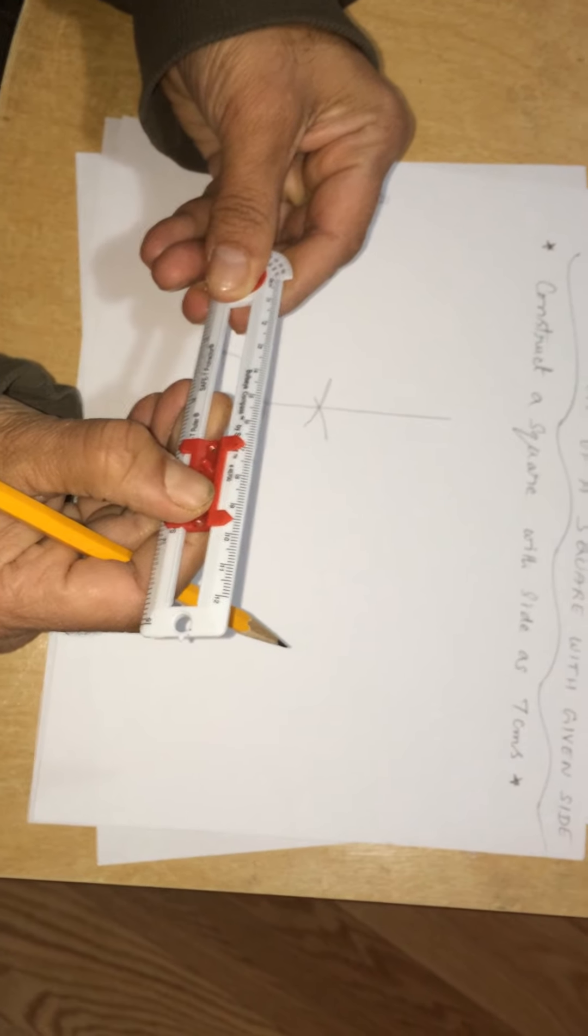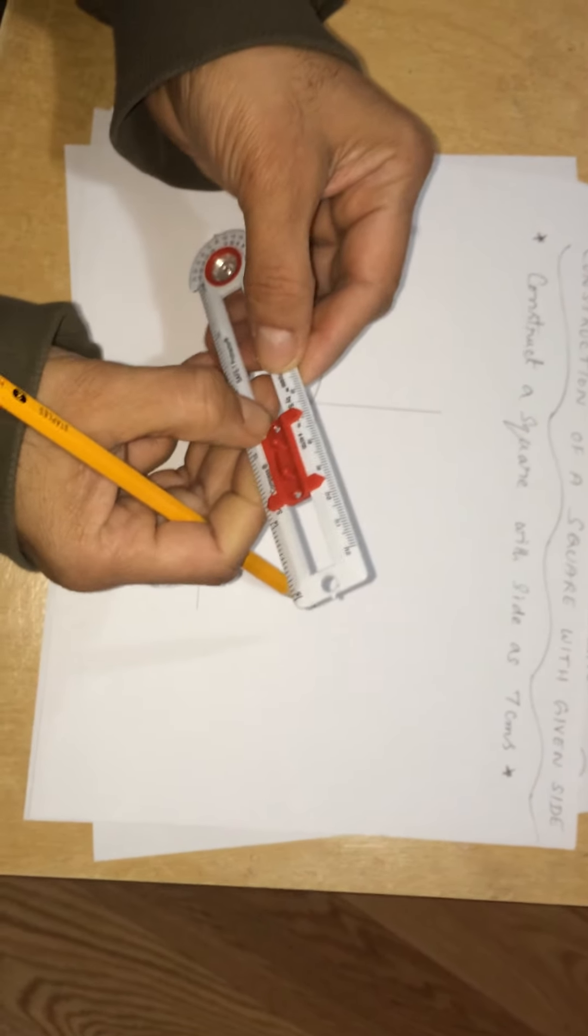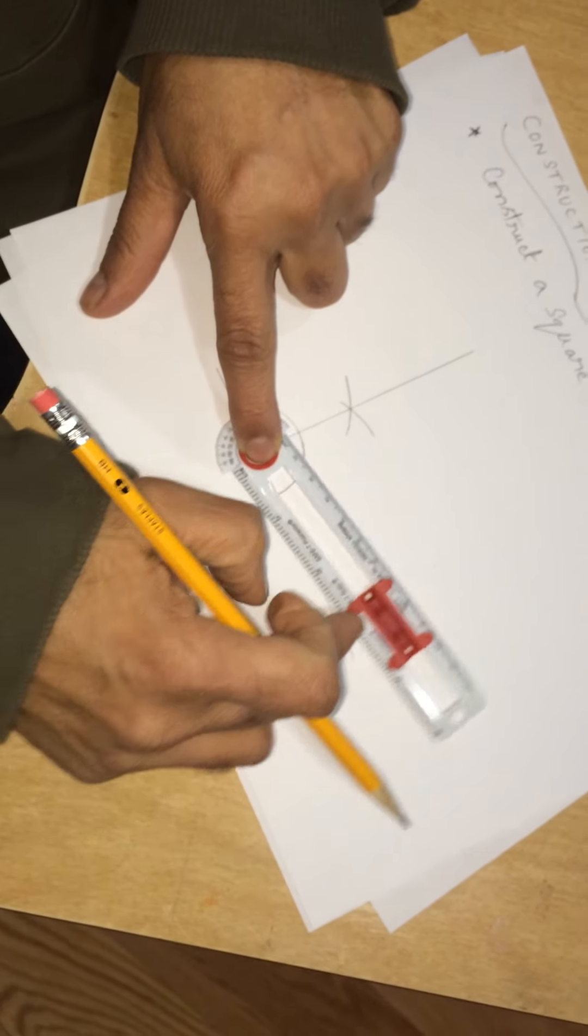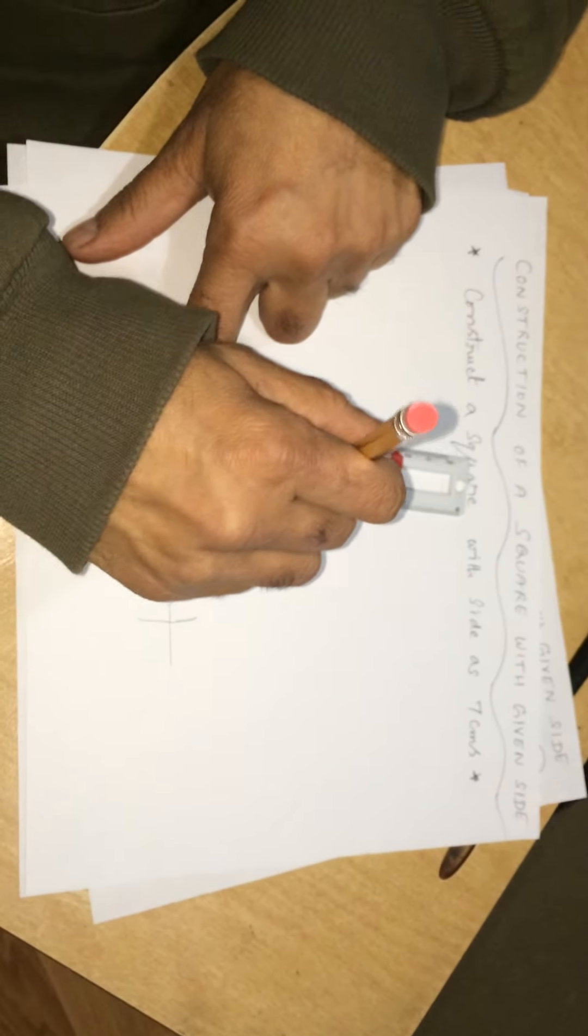Since the side is 7 centimeters, I adjust this hole for 7 centimeters like this. Now, this is exactly 7 centimeters. I put it first at A, and taking A as center with 7 centimeters radius, I cut this line segment. Without lifting, I move this one here and again cut this line segment here.